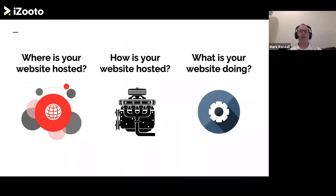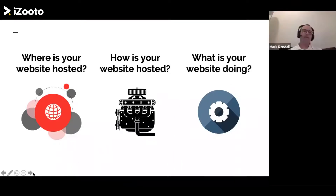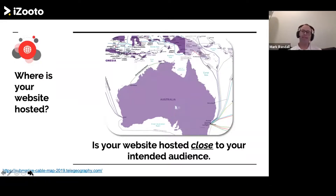There are optimizations that can be made across the stack — that's the good news — before you even think about upgrading hardware. On the infrastructure side, there are three big questions: where is your website hosted, how is it hosted, and what is it doing? Starting with the first: your site needs to be hosted close to your intended audience. If your analytics show most users come from the US but your server is in Hong Kong, that's not ideal.